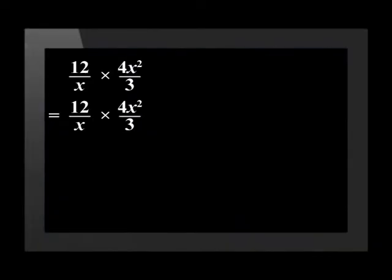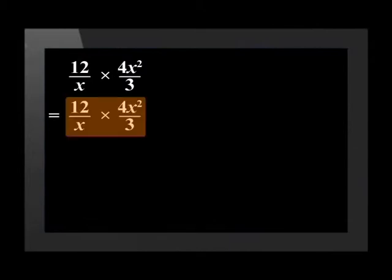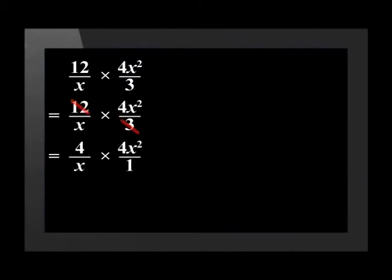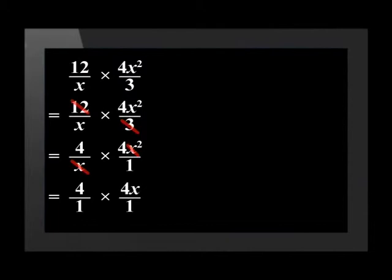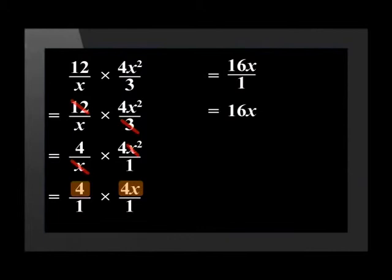We can cancel any numerator with any denominator as long as the fractions are being multiplied. In the expression 12 over x times 4x squared over 3: 3 goes into 12 and 3, so we divide both by 3 and are left with 4 over x times 4x squared over 1. Then x and 4x squared have a common factor of x, leaving us with 4 over 1 times 4x over 1. Multiplying top by top and bottom by bottom: 4 times 4x is 16x, and 1 times 1 is 1. Our answer is therefore 16x.